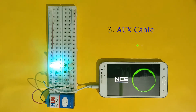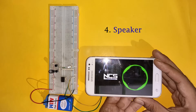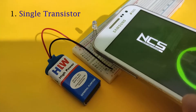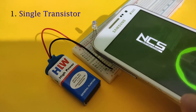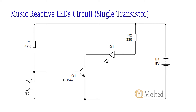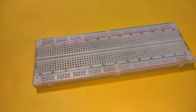So let's start with the circuit using a single transistor. These are the components required to make this circuit, and this is the circuit diagram. Place the BC547 transistor on the breadboard with its emitter connected to the negative rail.